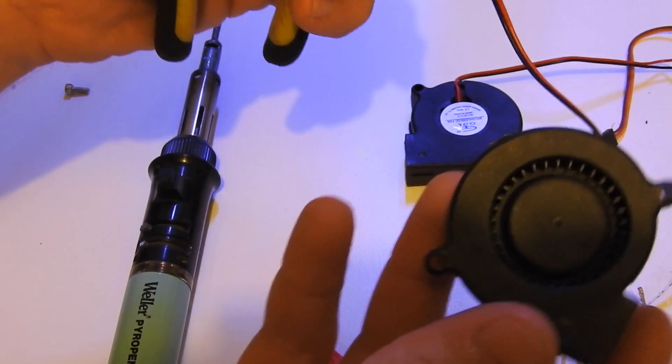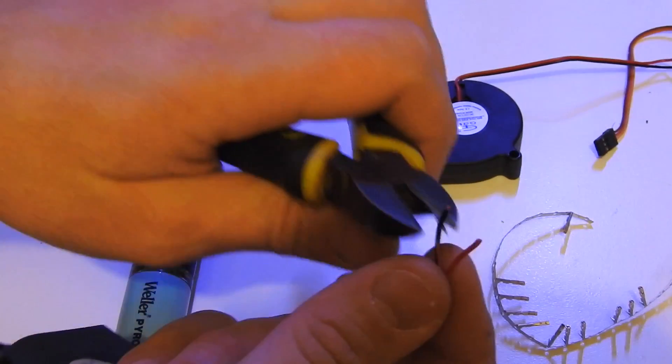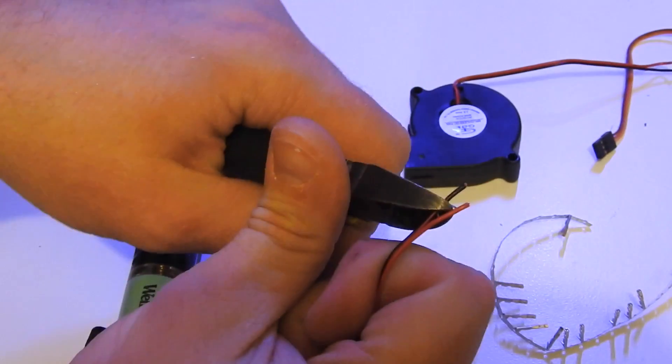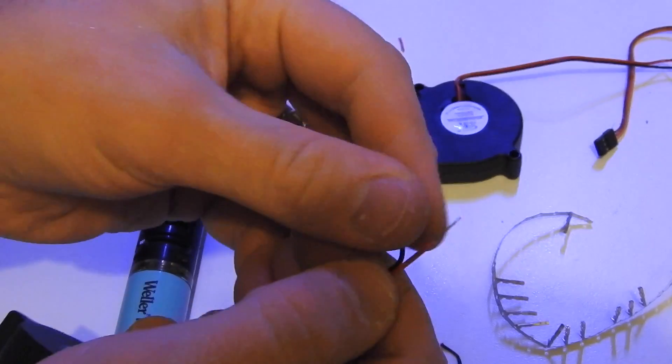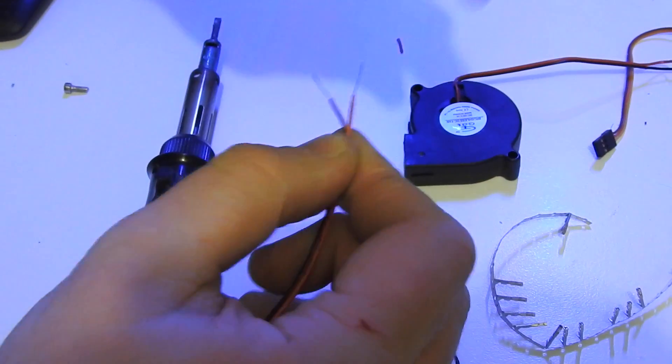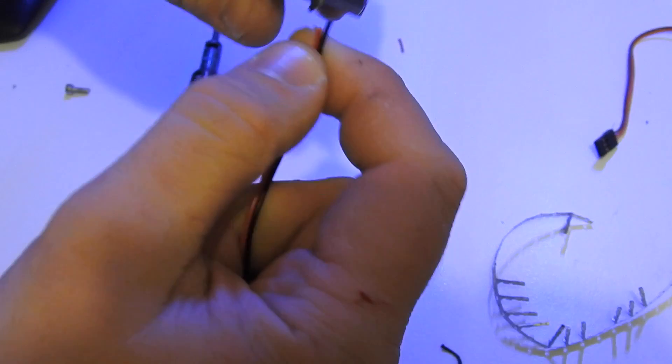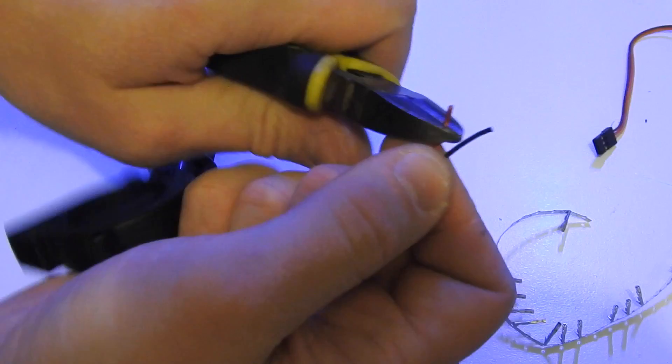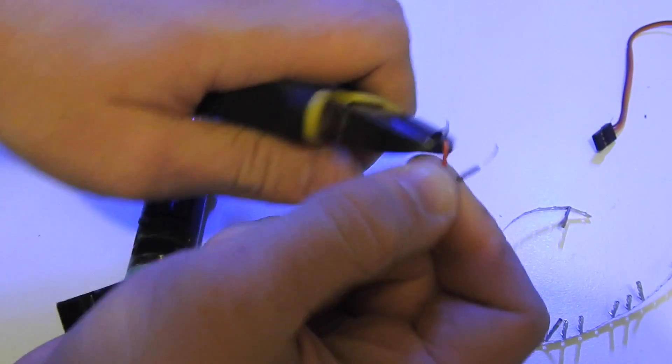All right so first step, grab one of the cooling fans. I've already cut the connector off. You're just going to want to strip about 10 mil so the copper wiring is exposed. Twist them so they're twisted together like that and then grab the second one and cut the plug off that one as well. Strip about 10 mil on the second one.